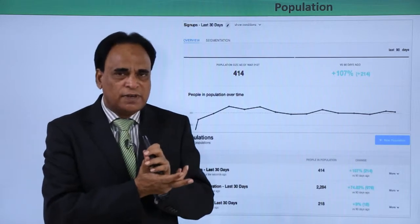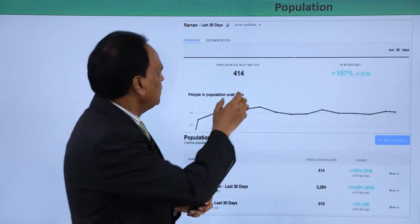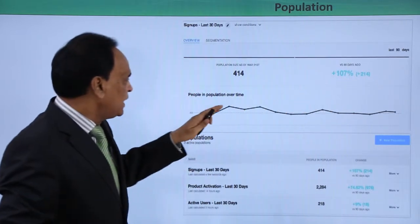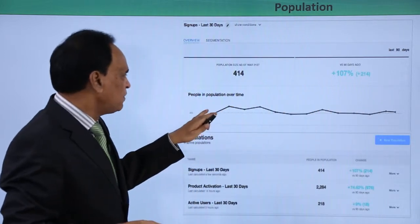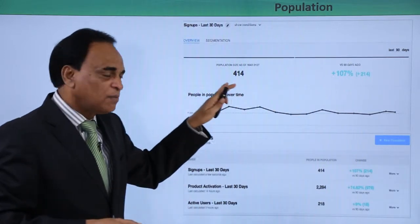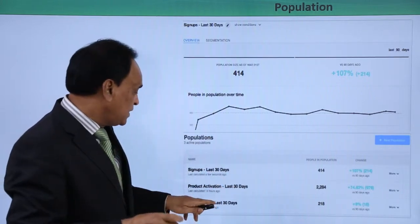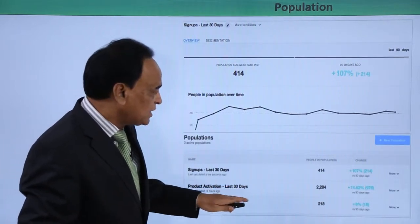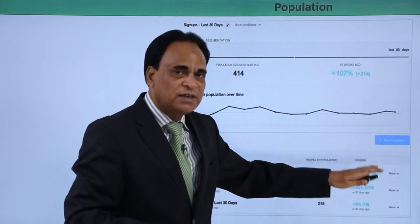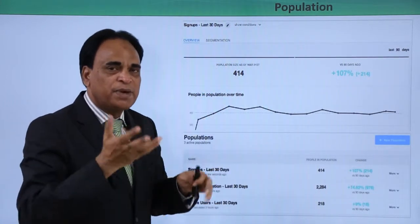The population chart is one of the key features of KISS Matrix. It gives you complete information about the size of the population floating through your site, showing increases or decreases. The map shows the complete flow of traffic on your website — people in the population over time. It also shows signups in the last 30 days, product activation in the last 30 days, and archived users in the last 30 days, with percentage changes. This is a screenshot of the population page of the KISS Matrix tool.